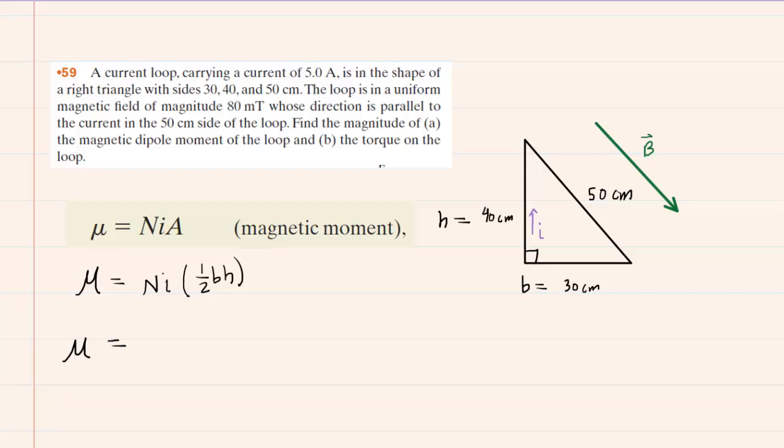The question notes that it is a current loop, and that indicates that the number of turns in this loop is just one. It's just a single loop. So the value for capital N would be 1 multiplied by the current, which is given as 5 amps, and then multiplied by one-half. The base needs to be converted into meters. So we'll take 30 and multiply it by 10 to the minus 2, and that will convert the centimeters into meters. And then the same thing is true with the height. We'll take the 40 and multiply that by 10 to the minus 2 to get it into meters. We punch this into our calculators, and we end up with 0.3.